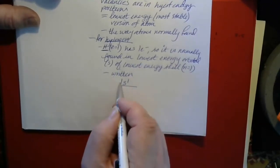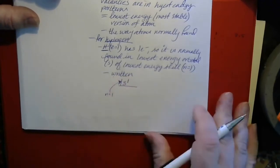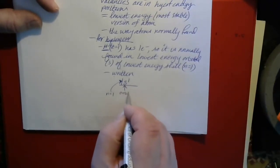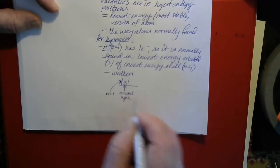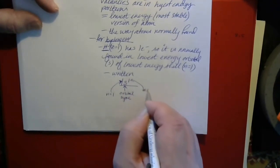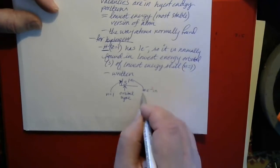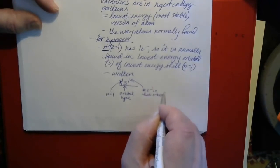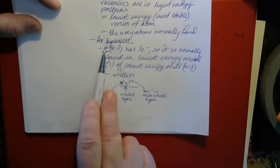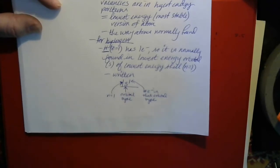In this electron configuration notation, the number at the beginning indicates the electron is in the first shell, the S tells us the orbital type, and the superscript number tells us the number of electrons in that orbital. So essentially we're saying hydrogen has one electron and it happens to be in the S-type orbital of shell number one.